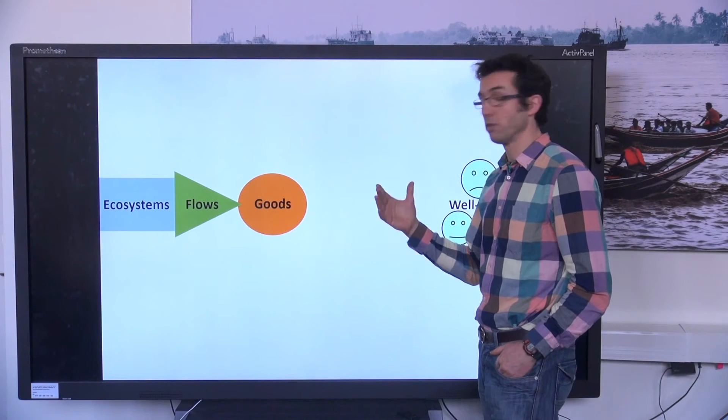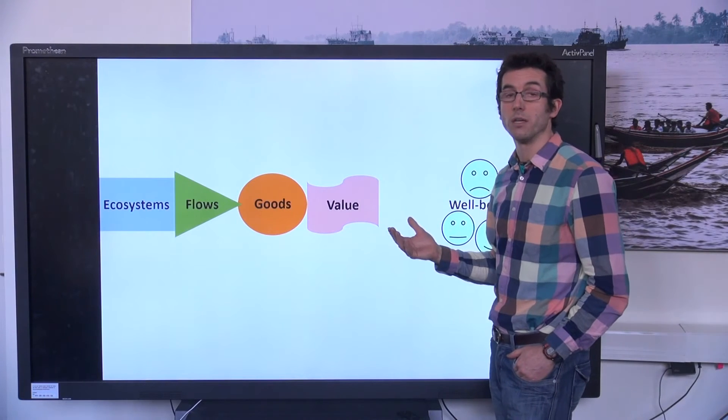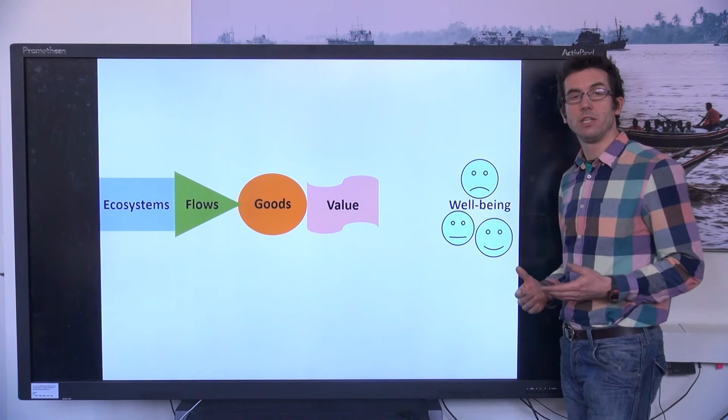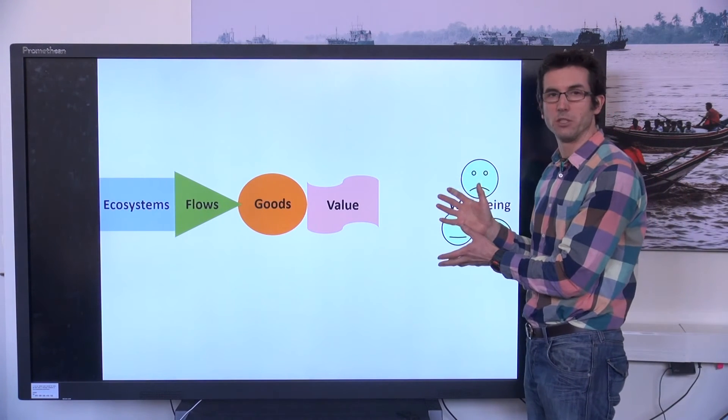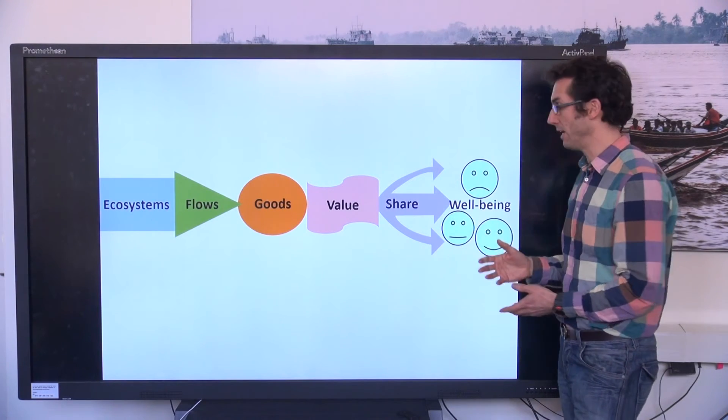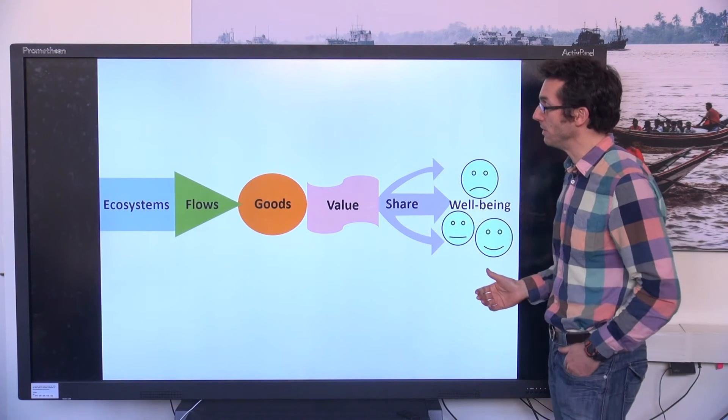Then those goods, because of various processes, assume a particular value, for example, because of markets or because of cultures. And because well-being is an individually experienced thing, the total value doesn't tell us much about the contribution to well-being. We need to see who's actually getting a share of that value, so who has access, and how that value is distributed to different people.